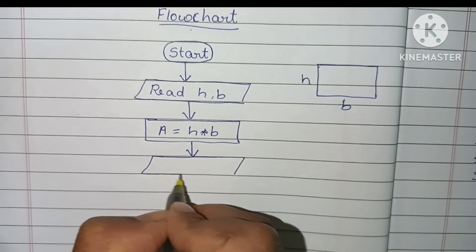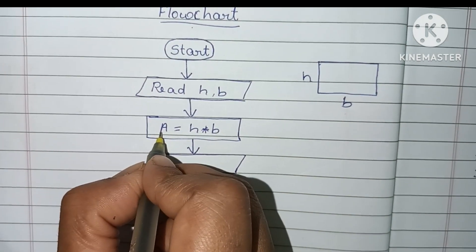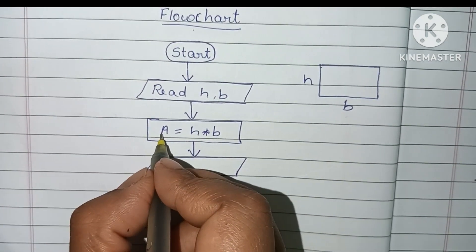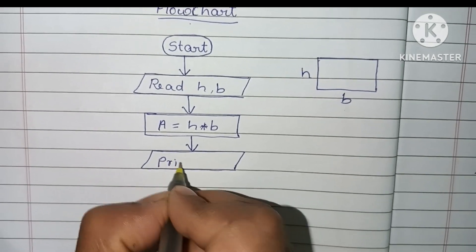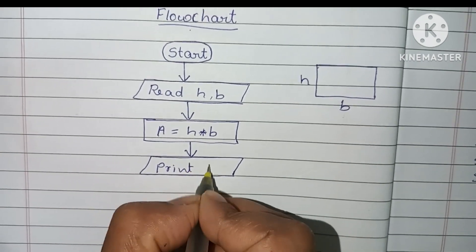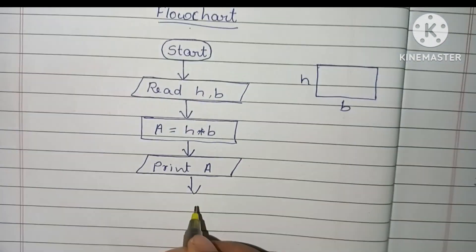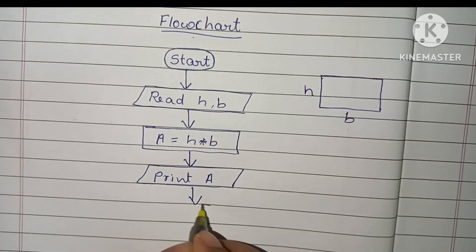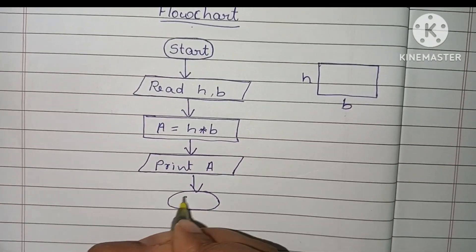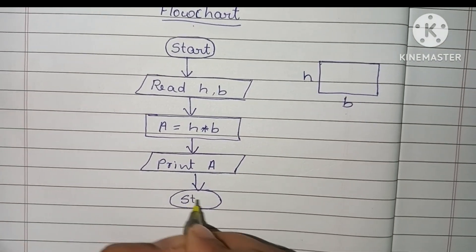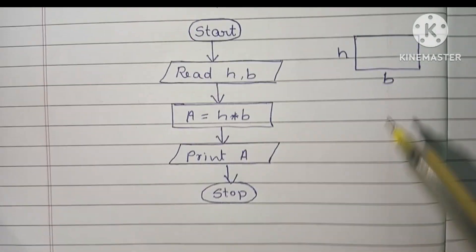Next we have to print the output. The output here is A, which represents the area of the rectangle. We print A within a parallelogram shape. Then we stop the flowchart using the stop statement, which is always written within an oval shape.